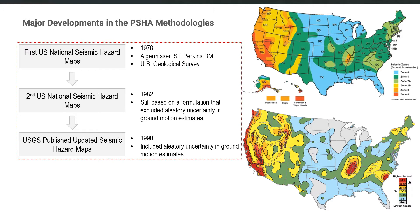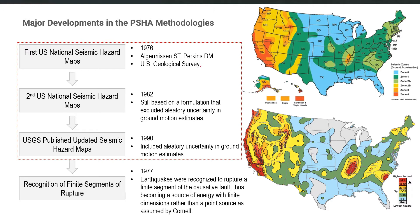Going back to the early developments, in 1977 the recognition of finite segments of rupture was introduced. The finite segments of causative faults were recognized and considered as sources of energy with finite dimensions, rather than a point source as assumed by Cornell in the original classical methodology.